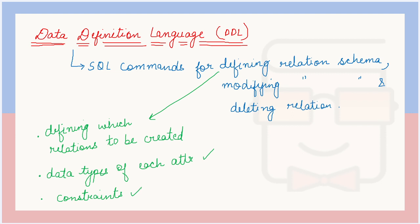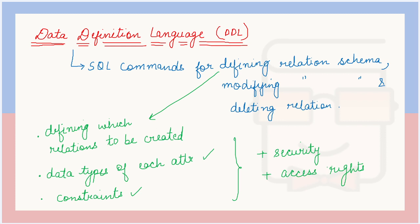Apart from these basic things, you can also include commands that ensure the security of your database and the data contained in it. You can write commands to impose access rights — that means specifying which person will be allowed to view which kind of content. For example, a normal employee will only be able to view their own information and not the sensitive information of the entire company. So depending on the kind of access, authorization, and authentication you want to perform, you can use the data definition language for that as well while defining the relational schema.